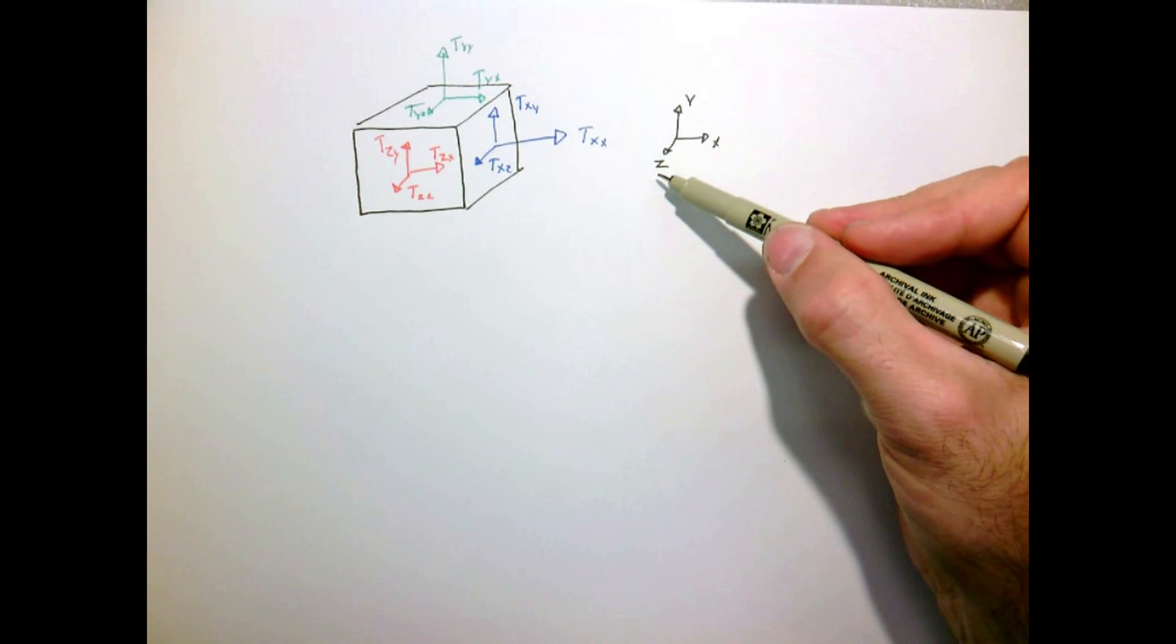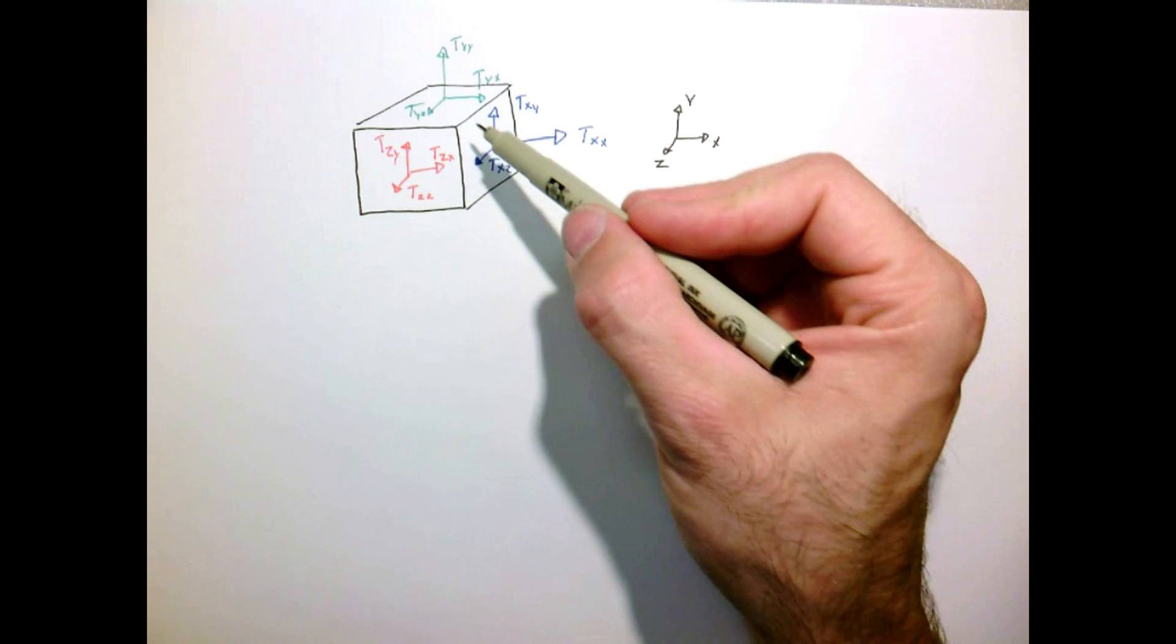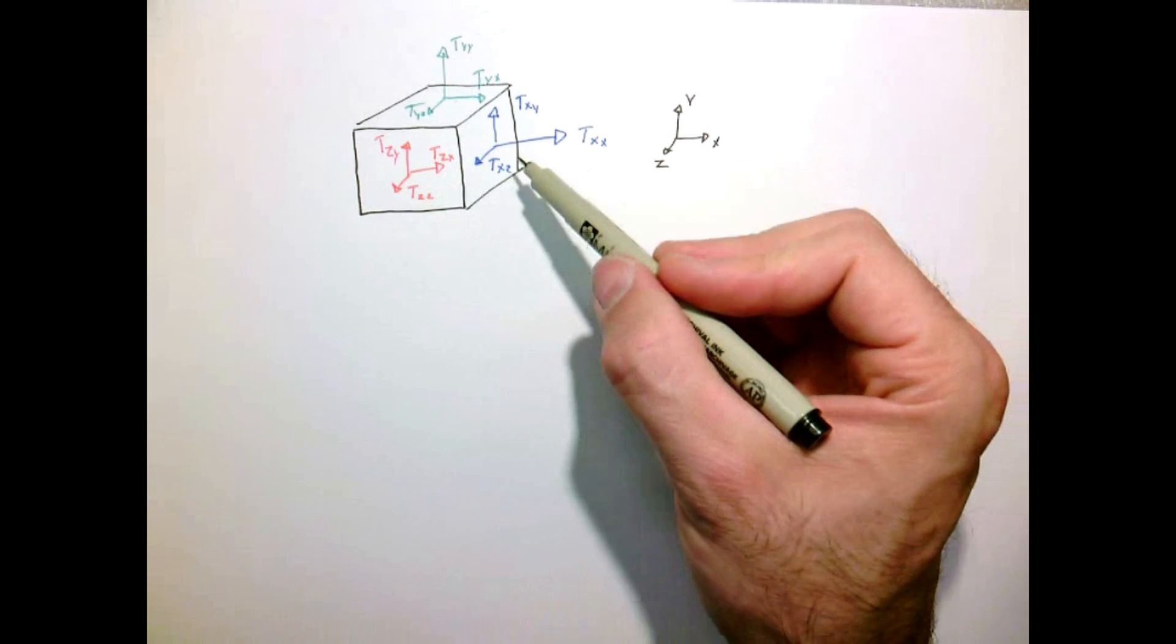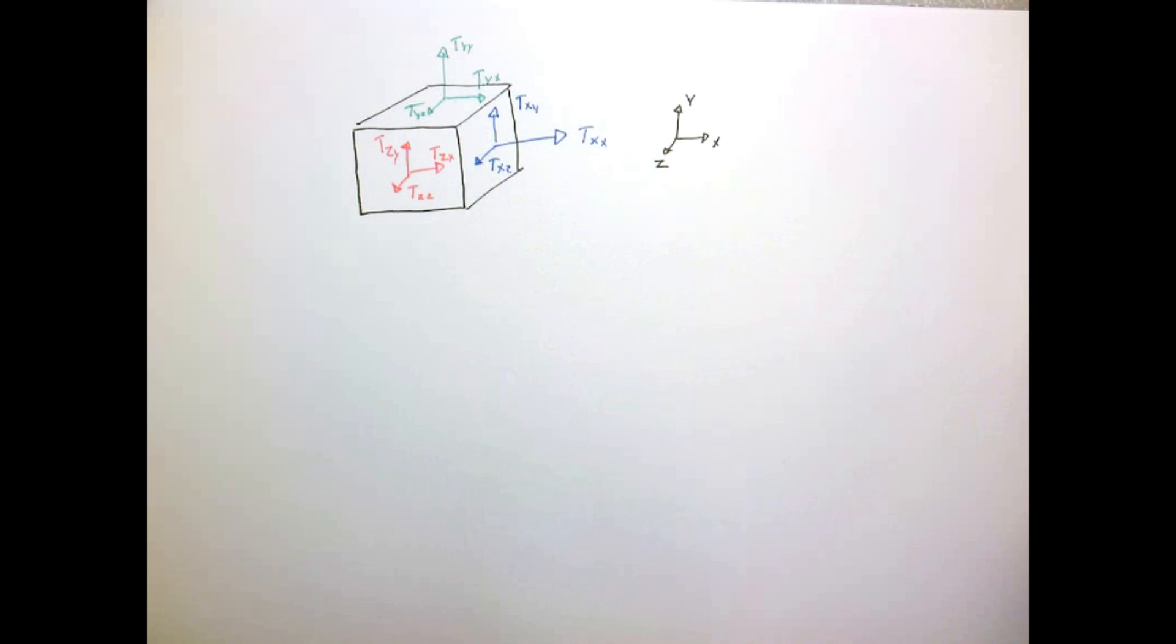So in an x, y, z coordinate system we have faces which have normal directions pointing in the x, y, and z direction. On each of those faces we have x, y, and z forces.